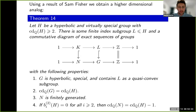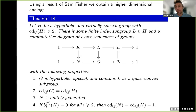In general, without restricting to cohomological dimension two, this result says there is an HNN extension of a finite-index subgroup over a group with rational cohomological dimension one less than the one you started with.